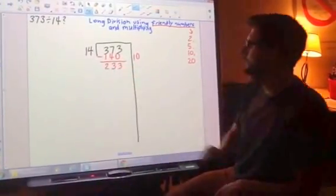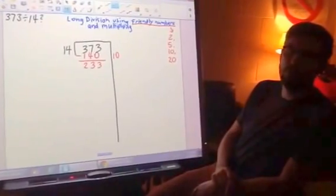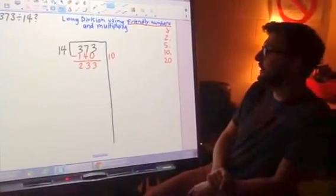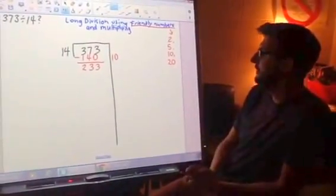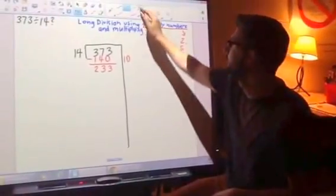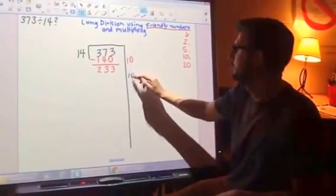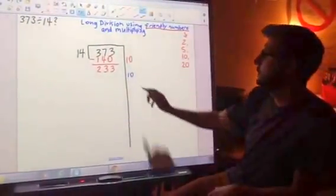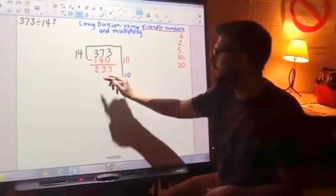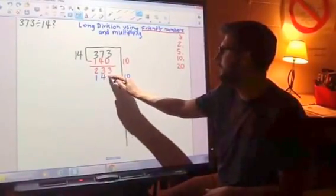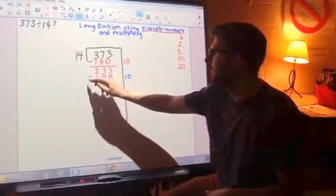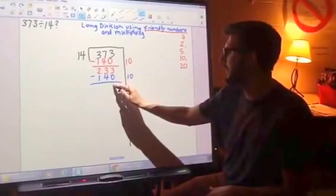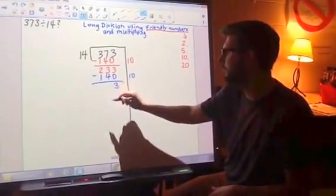At this point, the students should realize, oh, we've still got a long way to go. There's still 233 left. Let's try another 10. So once you put that 10 there, once again, we're going to multiply by 140 and subtract again. And this just becomes a process until you get down to a number that is smaller than 14.